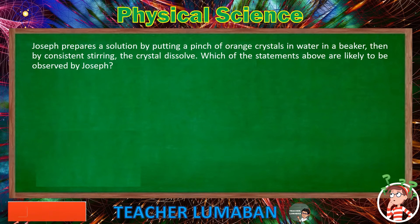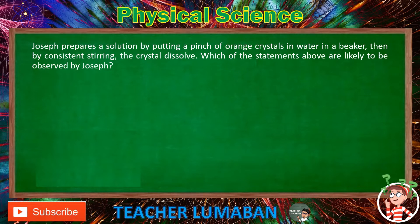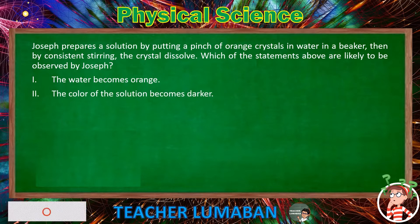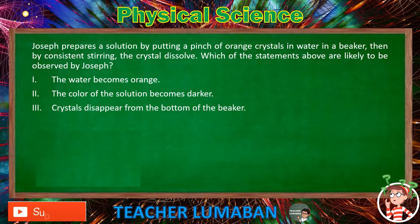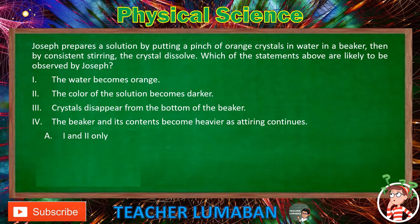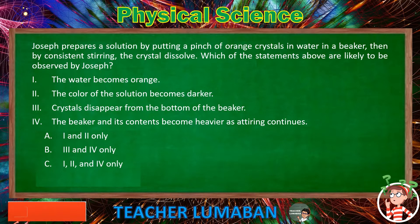Joseph prepares a solution by putting a pinch of orange crystals in water in a beaker, then by consistent stirring the crystals dissolve. Which of the statements above are likely to be observed by Joseph? Roman numeral 1: The water becomes orange. Roman numeral 2: The color of the solution becomes darker. Roman numeral 3: Crystals disappear from the bottom of the beaker. Roman numeral 4: The beaker and its contents become heavier as stirring continues. Letter A: 1 and 2 only. Letter B: 3 and 4 only. Letter C: 1, 2, and 4 only. Letter D: 1, 2, and 3 only. Choose the suitable answer based on the given choices in 5 seconds.